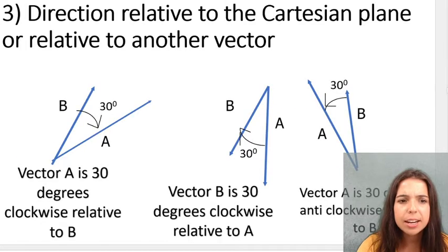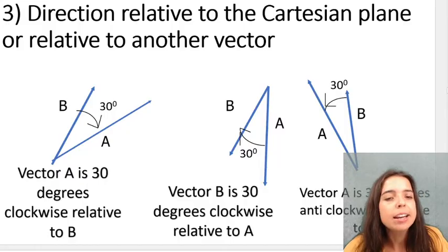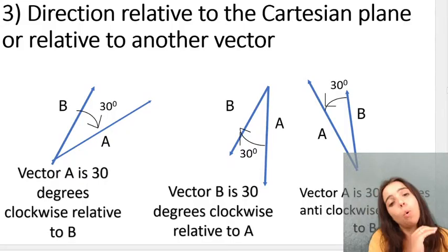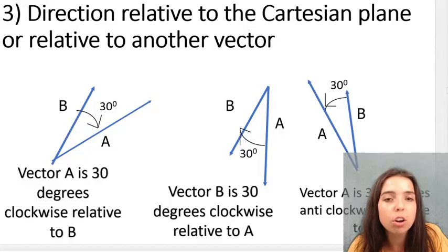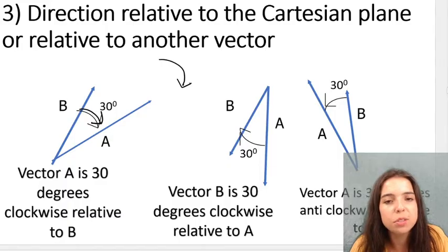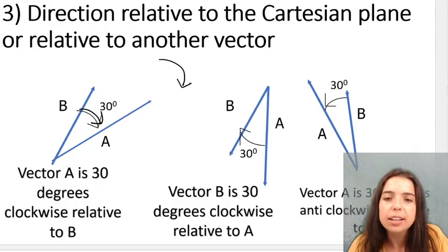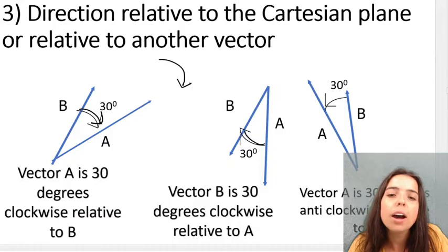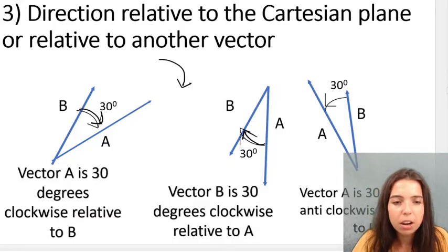Then I can get direction relative to another vector. So I can say vector A is 30 degrees clockwise relative to B. Remember, a clock goes like this. So vector A is 30 degrees clockwise relative to B. Vector B is 30 degrees anticlockwise relative to A.